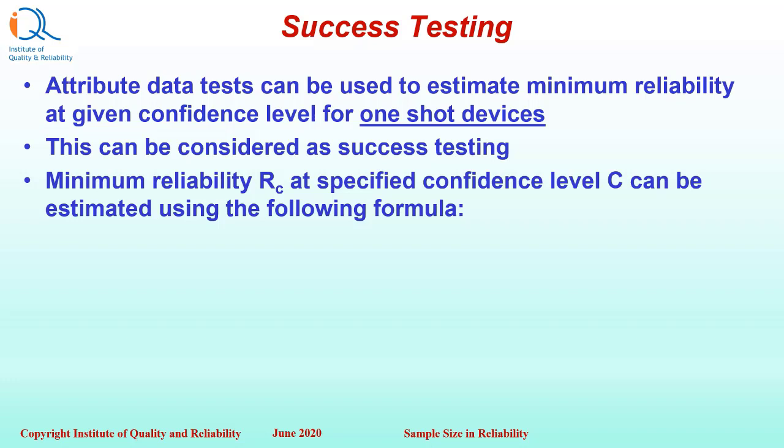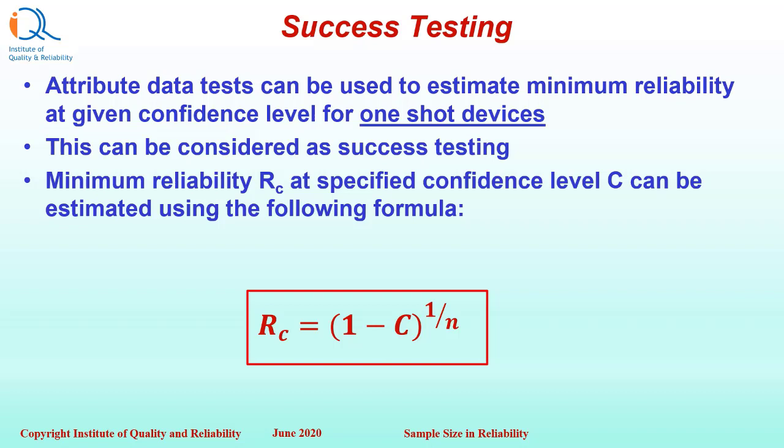Minimum reliability Rc at a specified confidence level C can be estimated using the following formula: Rc equals 1 minus confidence level C, raised to the power of 1 upon n, where n is the sample size.